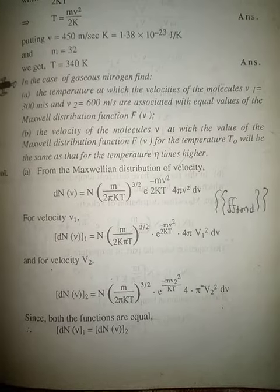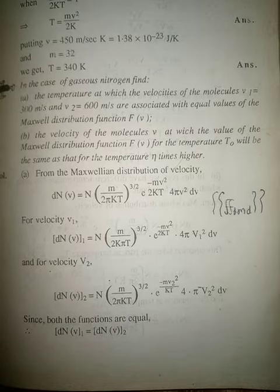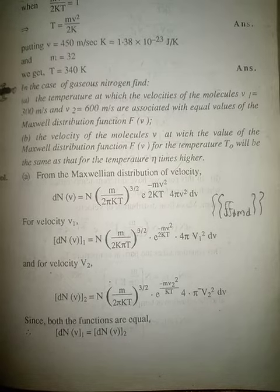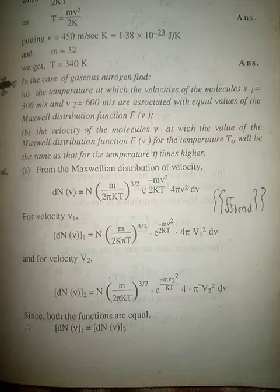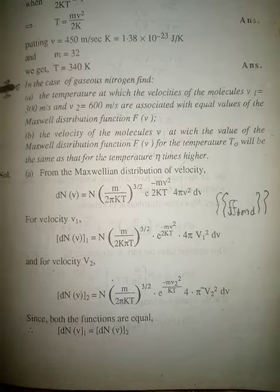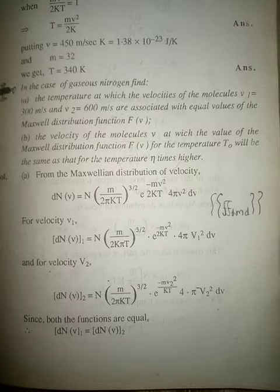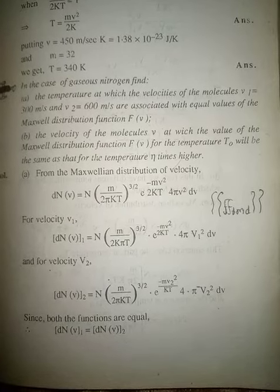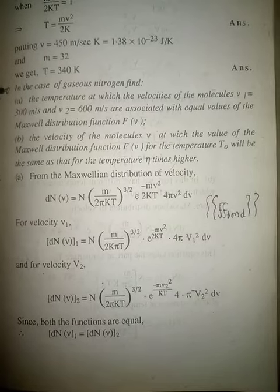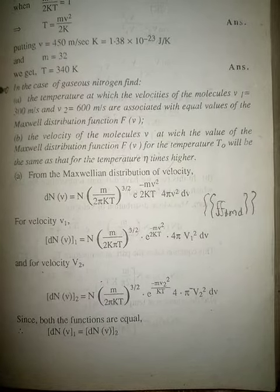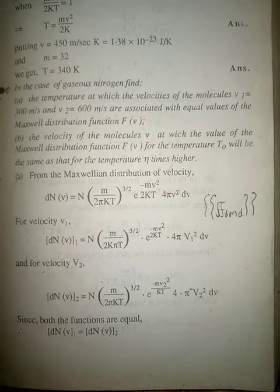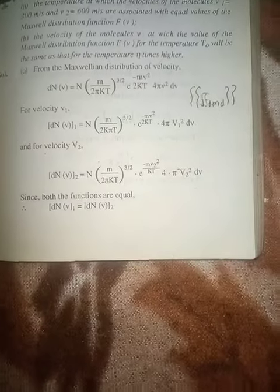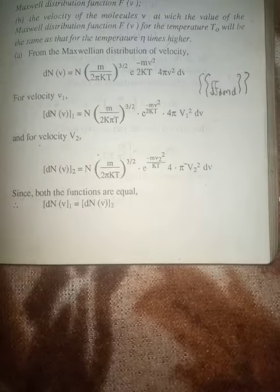For part (a), from the Maxwellian distribution: dN(v₁) = N × (m/2πkT)^(3/2) × e^(−mv₁²/2kT) × 4πv₁² dv, and dN(v₂) = N × (m/2πkT)^(3/2) × e^(−mv₂²/2kT) × 4πv₂² dv. Since both distribution function values are equal, we set dN(v₁) = dN(v₂).